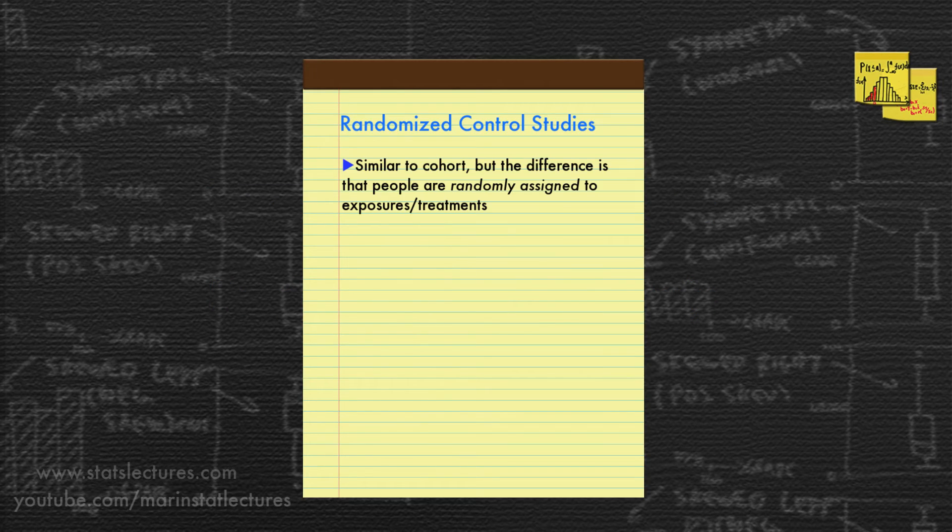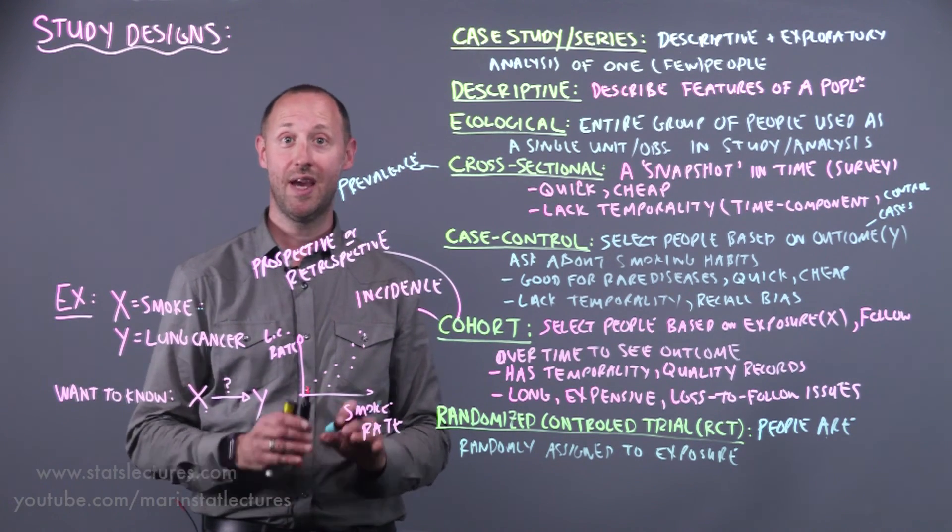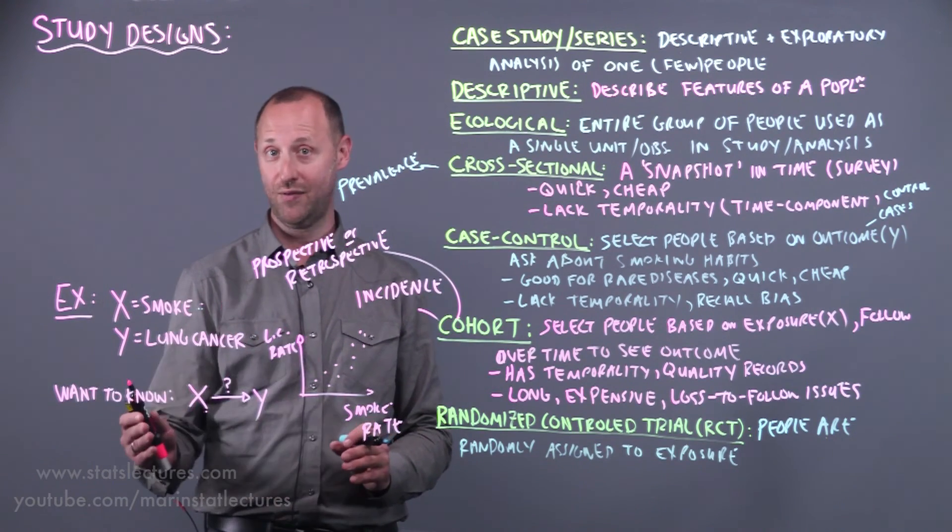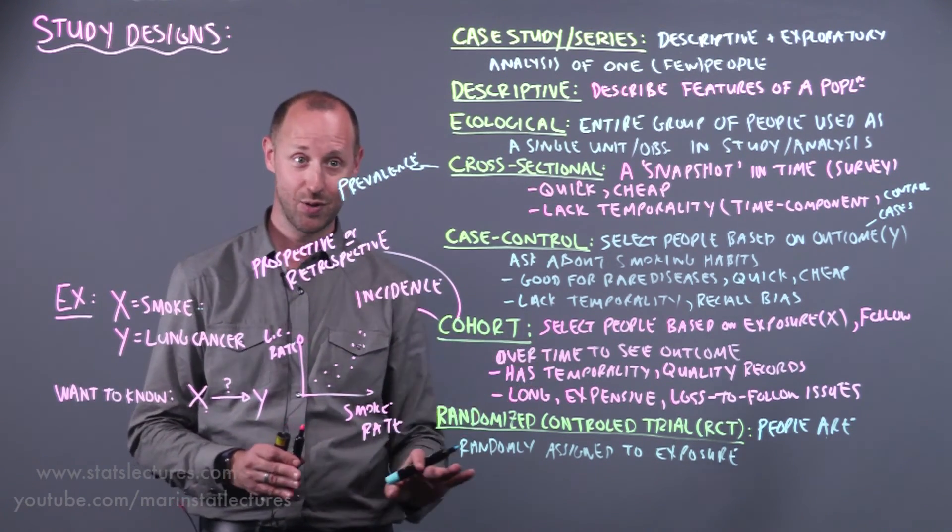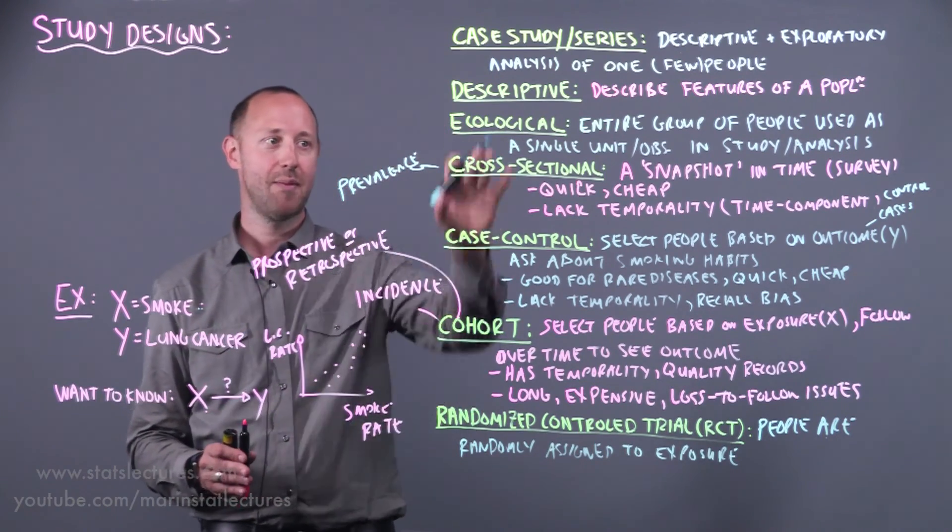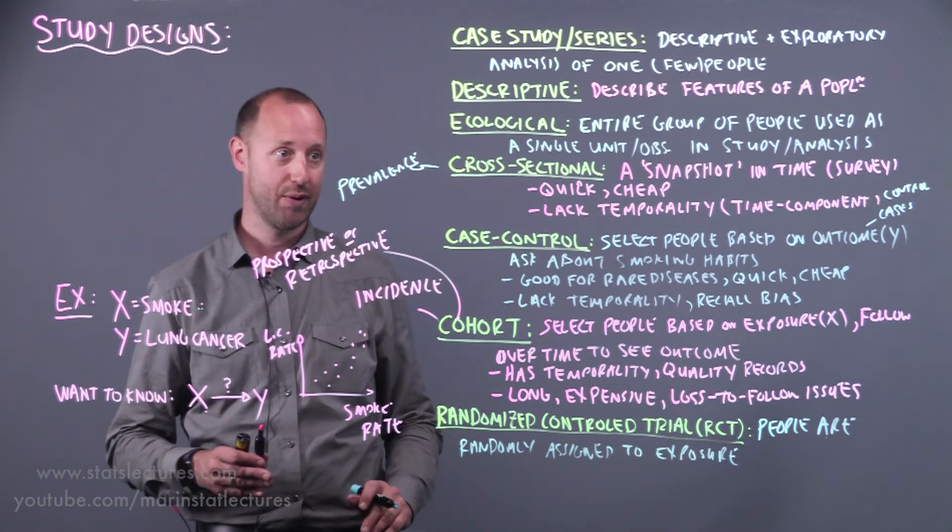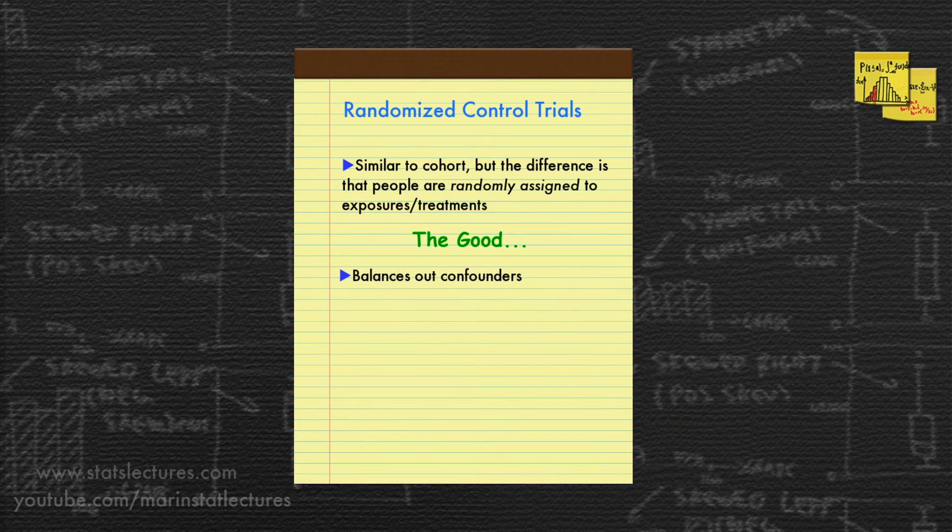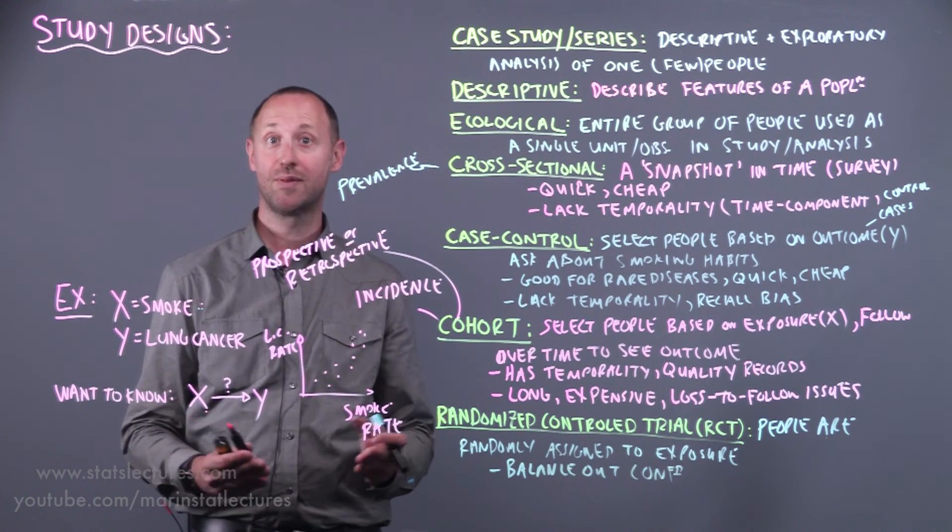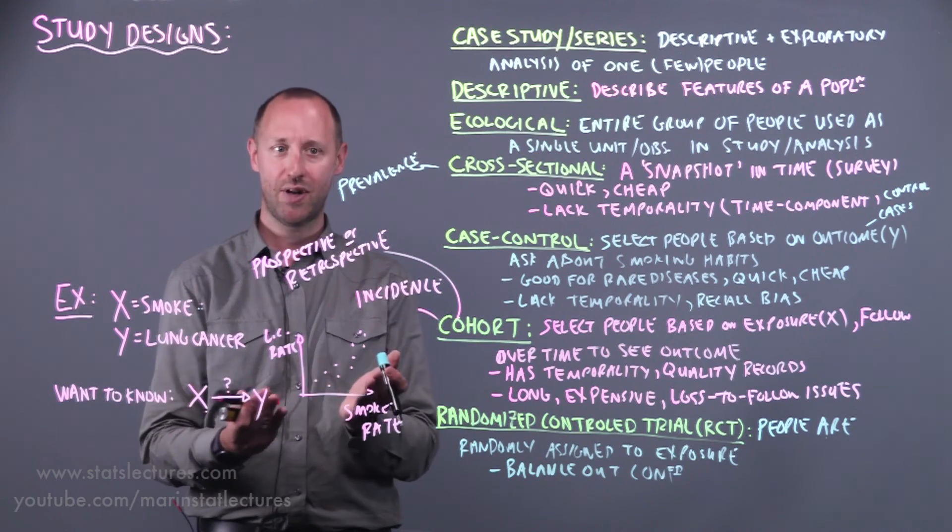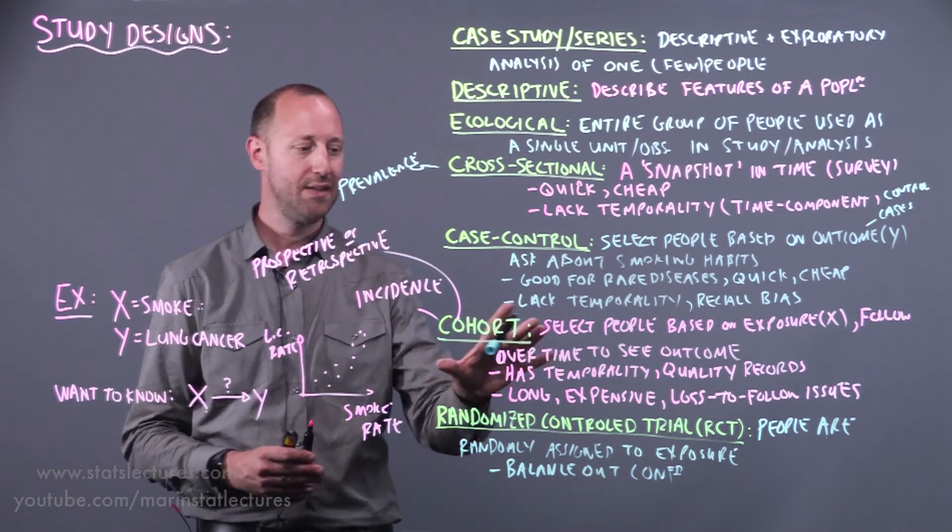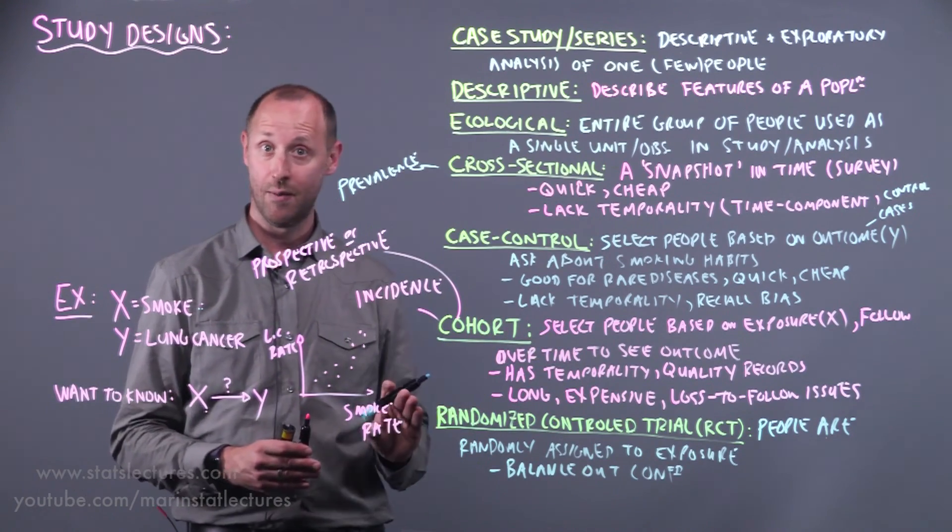Randomized control studies, they're very similar to cohorts, but the big difference here is that people are randomly assigned to exposures or to treatments. In this context, this would be taking a bunch of people, say taking a hundred people, randomly assigning 50 to smoke and 50 to not smoke, following them and seeing what happens. Now this is obviously unethical. We wouldn't do a randomized control design in this context, but we're using this example to compare and contrast the different designs and how they would work. One of the nice things about these is that they balance out the confounders. Previously we said smokers and non-smokers may differ in other ways like lifestyle apart from just the smoking. If we randomly assign people to smoke or not smoke, then they should be similar in every other way. We've eliminated those other factors. That's one of the real pros of experiments is that we don't have to worry about confounding.